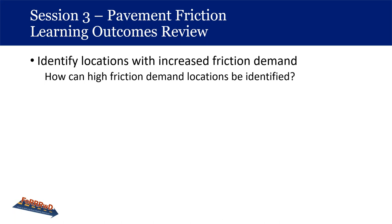Let's do a learning outcomes review. The question is: how can high friction demand locations be identified? Responses include: crash data locations with several wet road crashes, skid marks, curves where other measures haven't worked, crash data, skid tests, wet crashes, curves, intersections, review of crash histories, and polished pavement — where the aggregate has become rounded and lost its friction value.